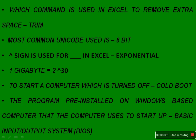The command used in Excel to remove extra spaces is TRIM — the word itself suggests trimming. The most common Unicode used is 8-bit. The caret symbol is used for exponentiation in Excel. One gigabyte — this was a repeated question from last year's mains exam — equals 2 raised to the power of 30.